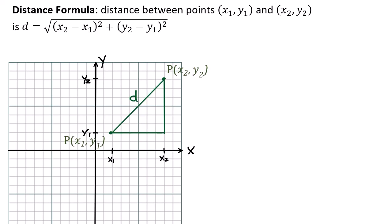Next we'll consider the distance between two points. The first point, P1, is (x1, y1) in the Cartesian plane, and the second point, P2, is (x2, y2). The distance between them is given by the formula: d equals the square root of (x2 minus x1) squared plus (y2 minus y1) squared.